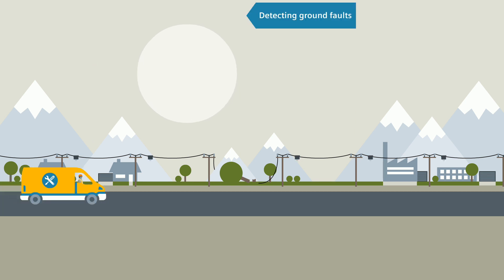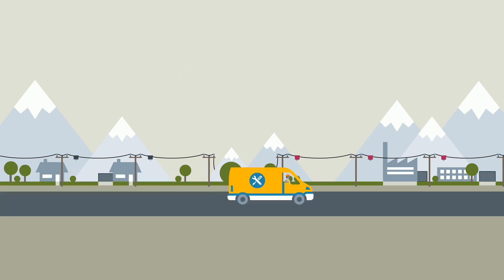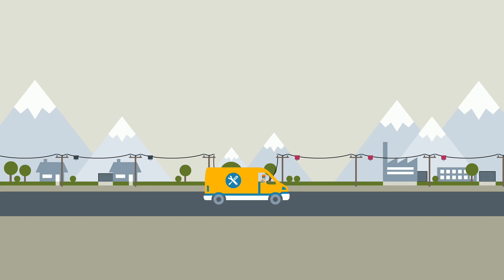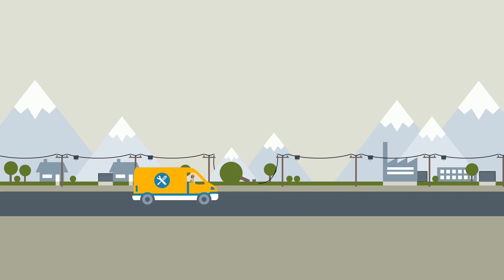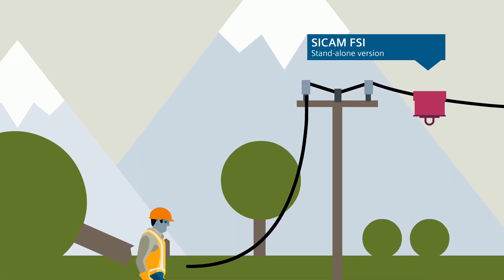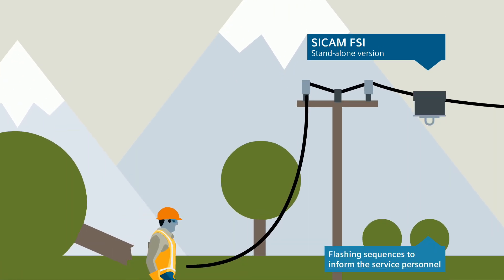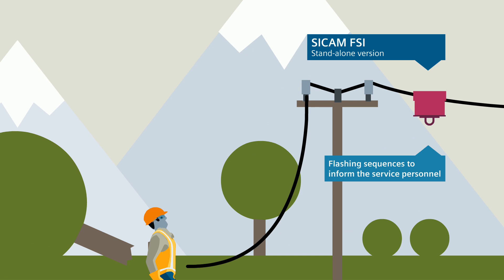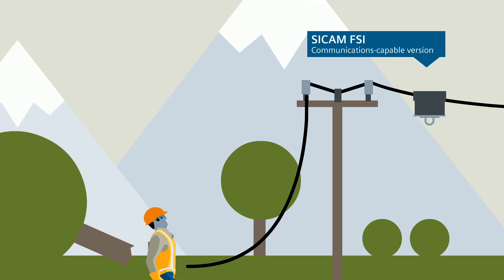As a stand-alone solution, the CCAM FSI uses different flashing sequences to inform the service personnel visually about the location and the type of fault.